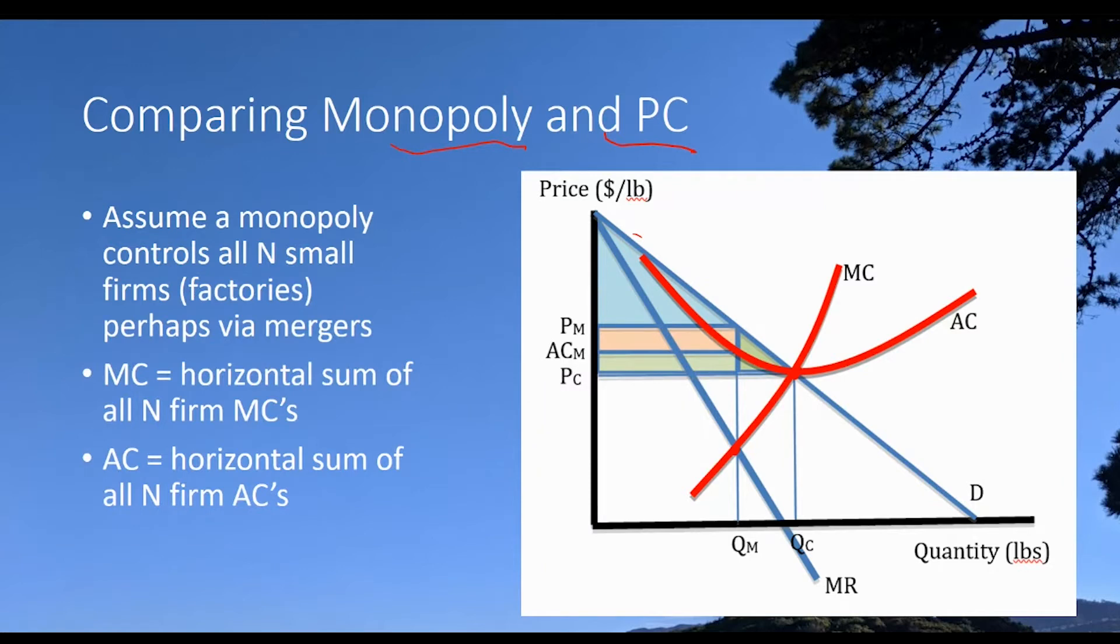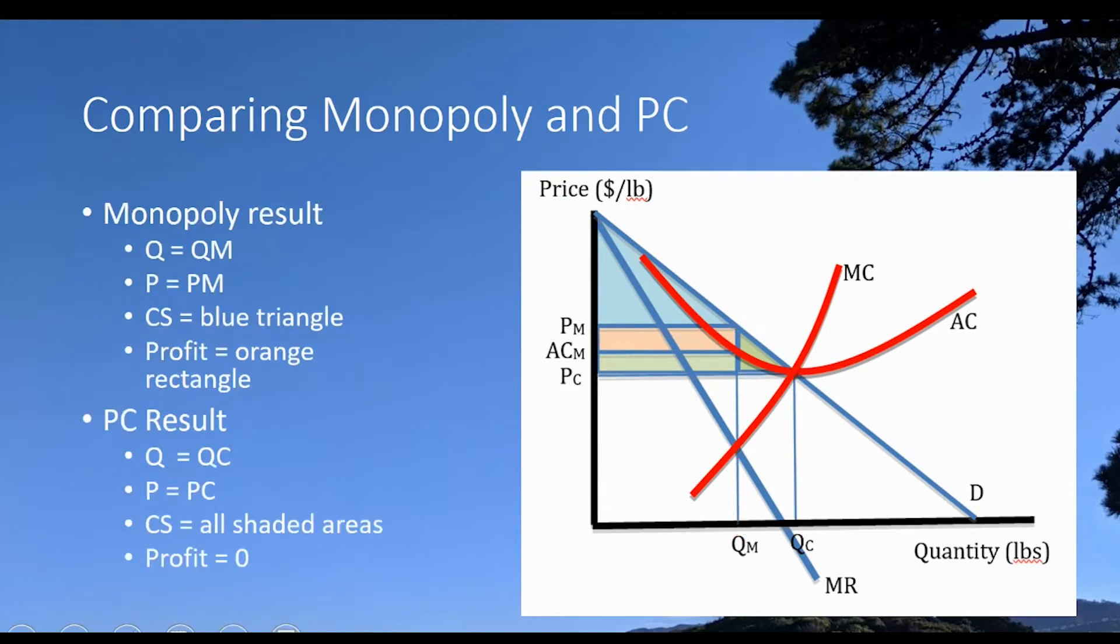So if it did that, it's going to find where marginal cost is equal to marginal revenue measured in this particular way. It's going to have the ability to adjust the price. It's going to charge a quantity QM, a price of PM, and the firm is going to be able to make profits given by this orange area right here. I think I have this listed on the next graph.